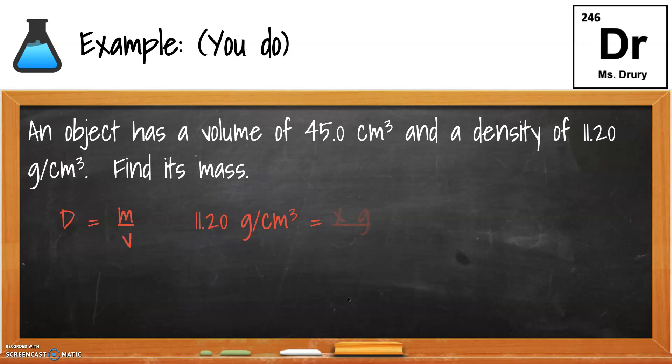So the setup is pretty much the same. 11.2 is given as a density. We don't know the mass, but we know the volume is 45. Sometimes they ask for just setup, so you do have to show this work, and you should know how to plug them in. Then you know to cross-multiply, hopefully, and go to three sig figs because 45.0 only had three sig figs. So 504 grams.